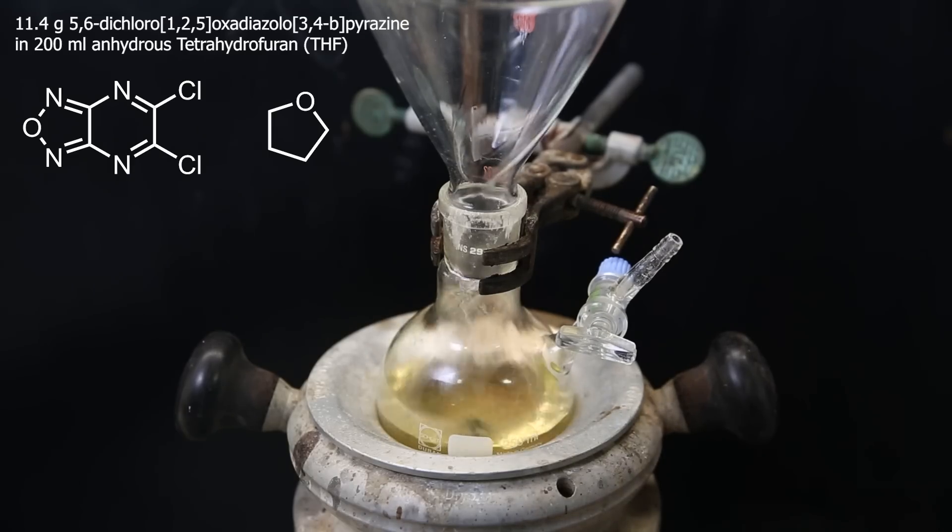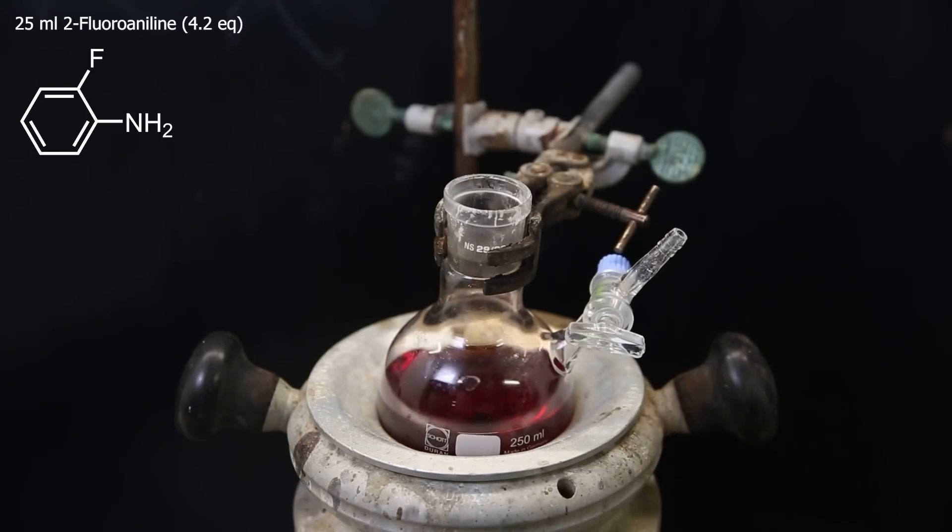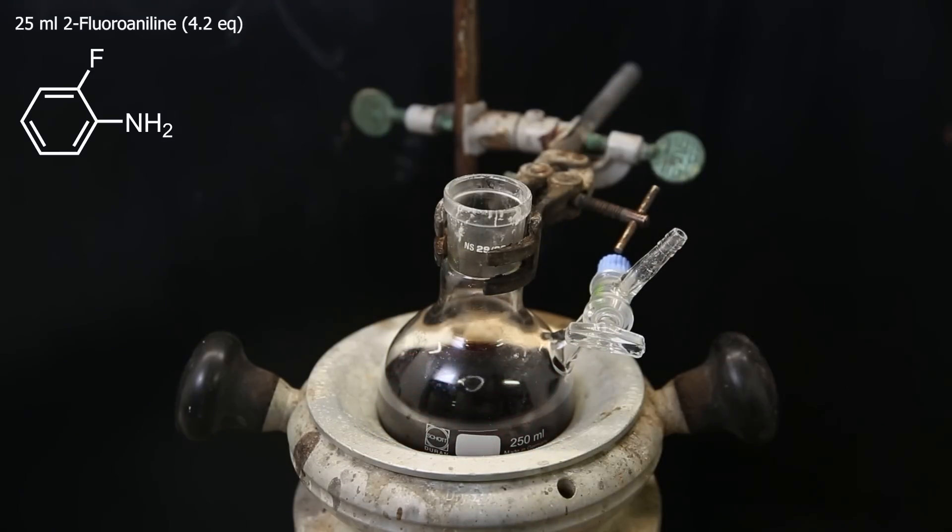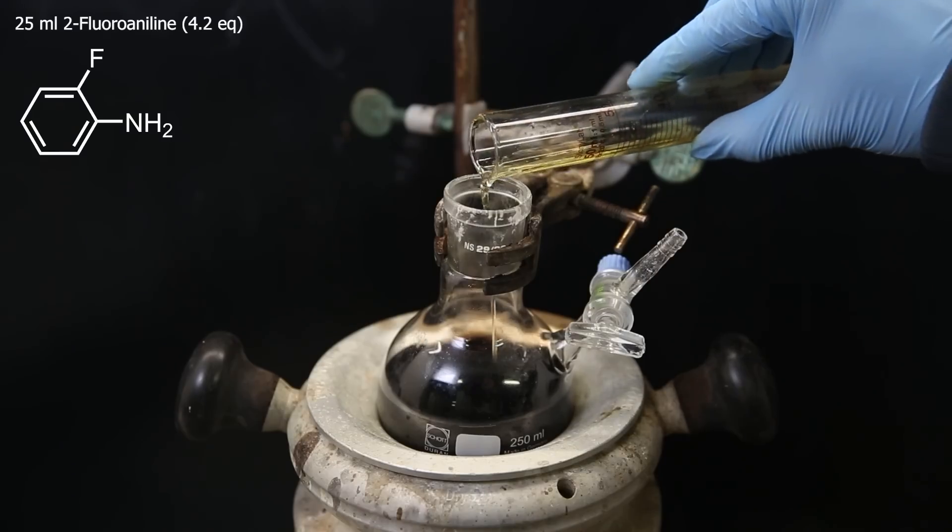So I dissolved all of the material in the solvent tetrahydrofuran and add it to the same flask I used for drying. Then the only reagent needed is 2-fluoroaniline, of which I add 25 mils. This is 4.2 equivalents, because in this reaction, it also serves as a base, plus a little bit extra to make sure it goes to completion.